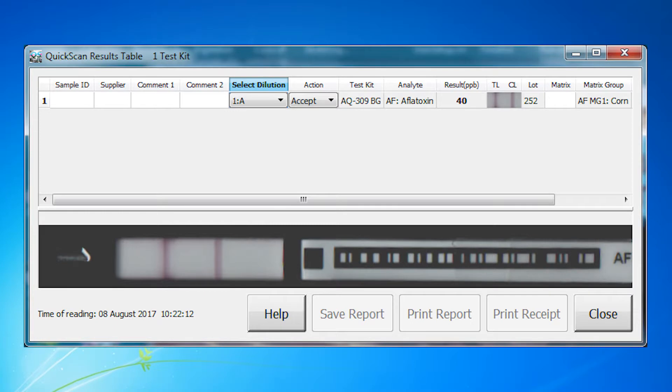Step 6. On the quick scan results screen, choose 1A under the dilution tab drop-down menu. The system will calculate and record the aflatoxin level in the diluted sample.